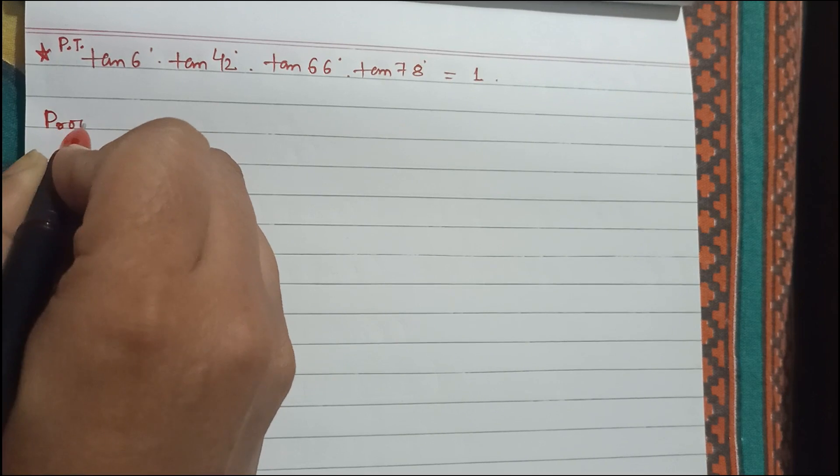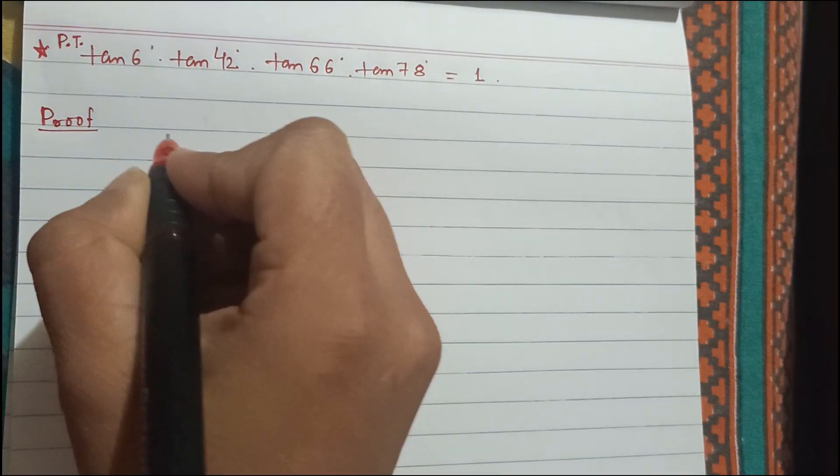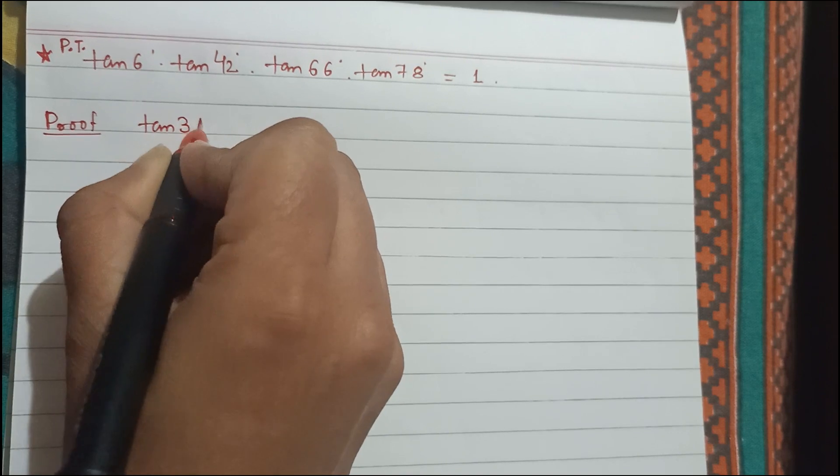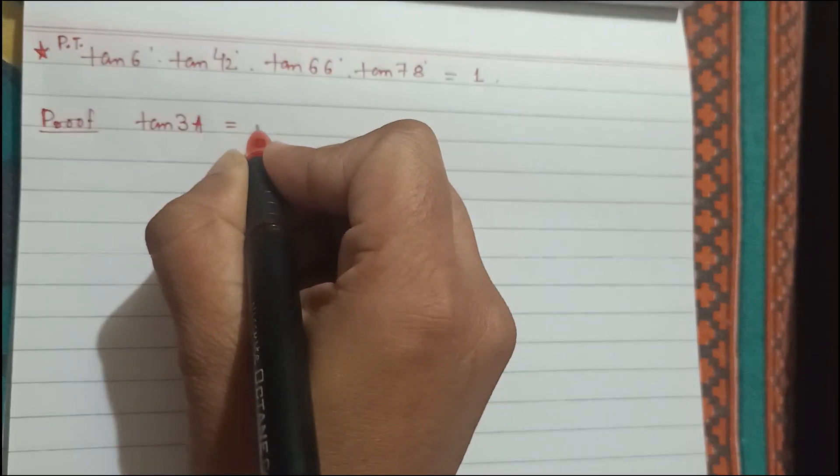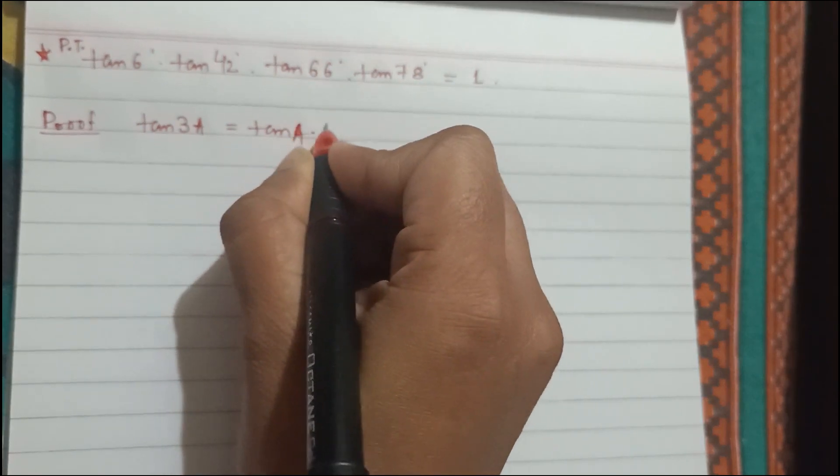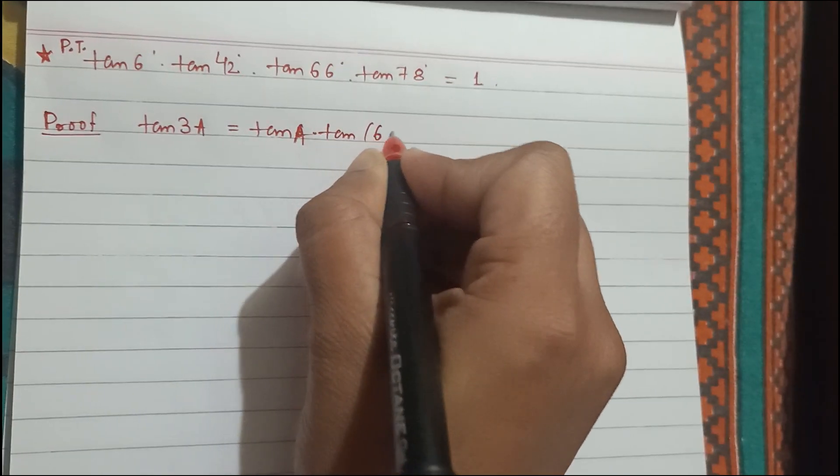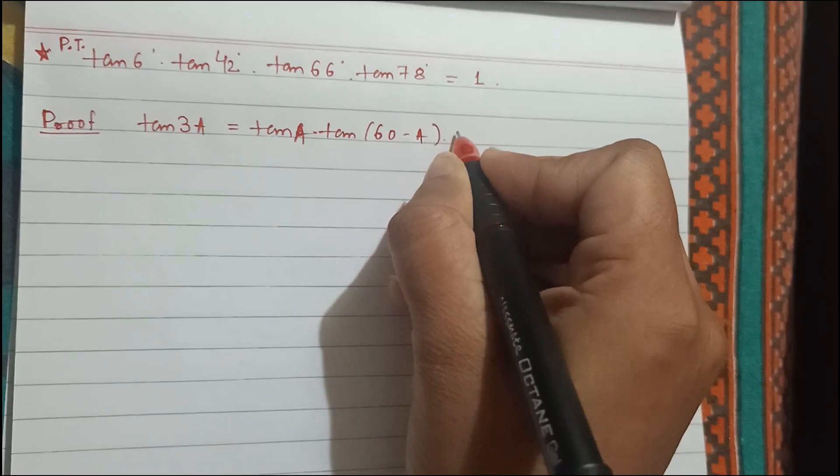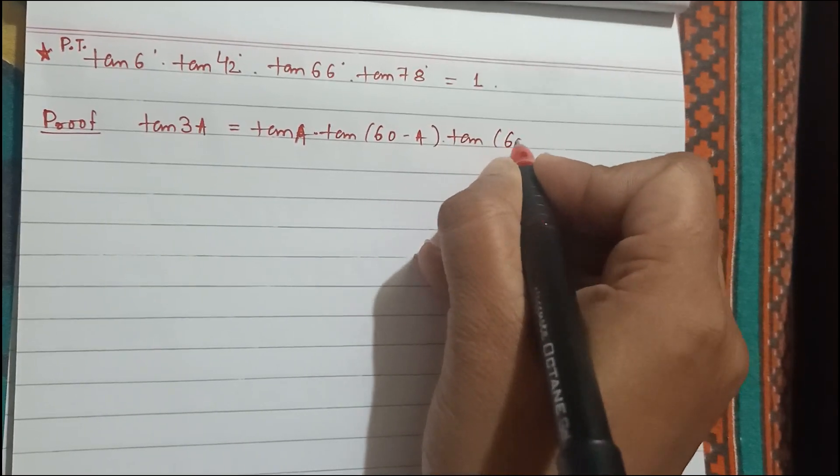So here for the proof we will use this formula: tan 3a equals to tan a into tan 60 minus a into tan 60 plus a.